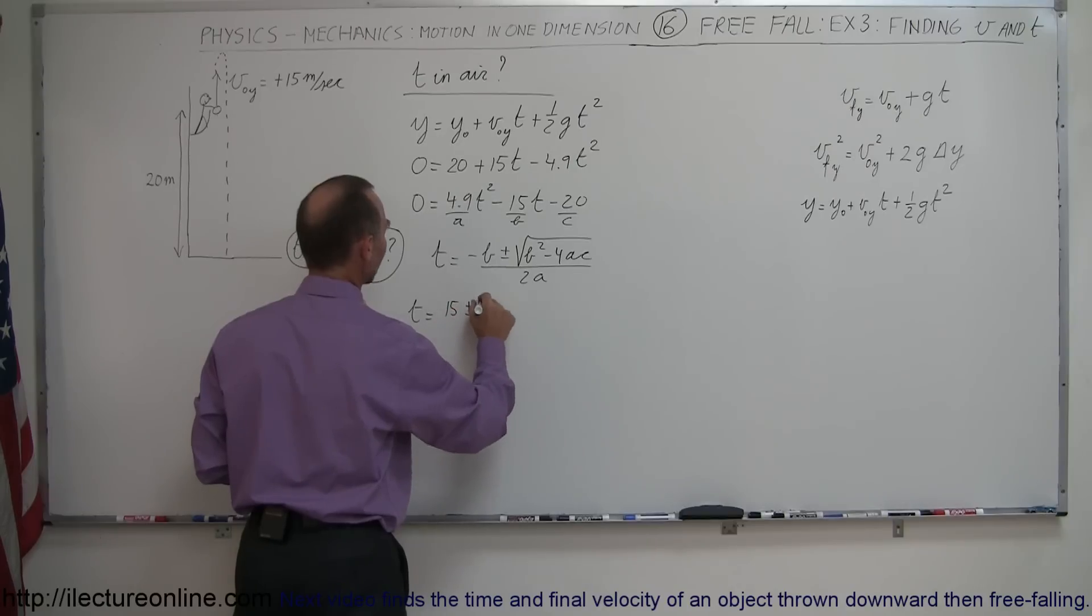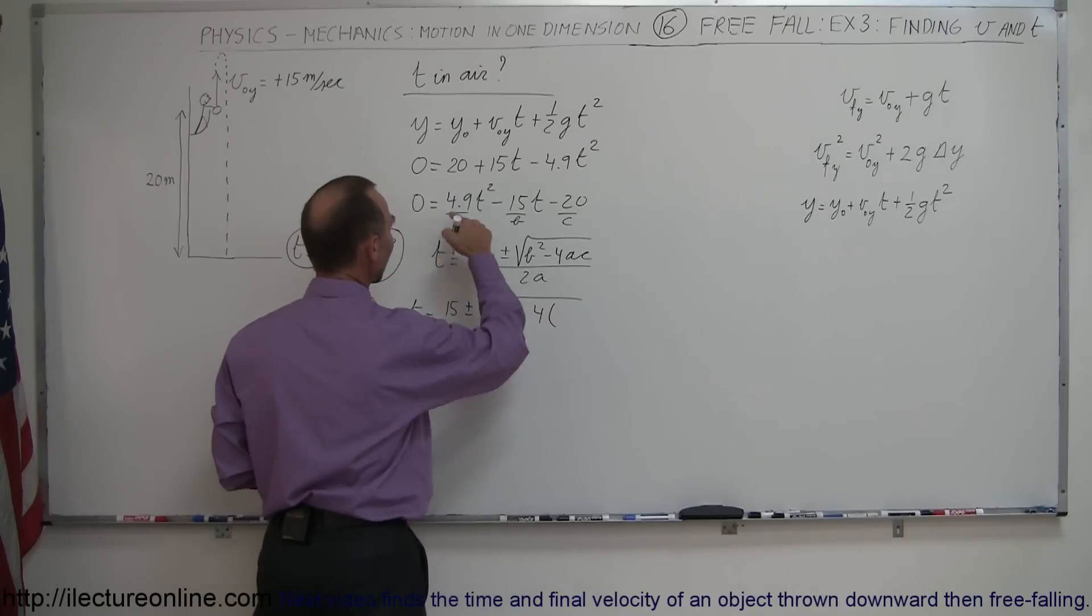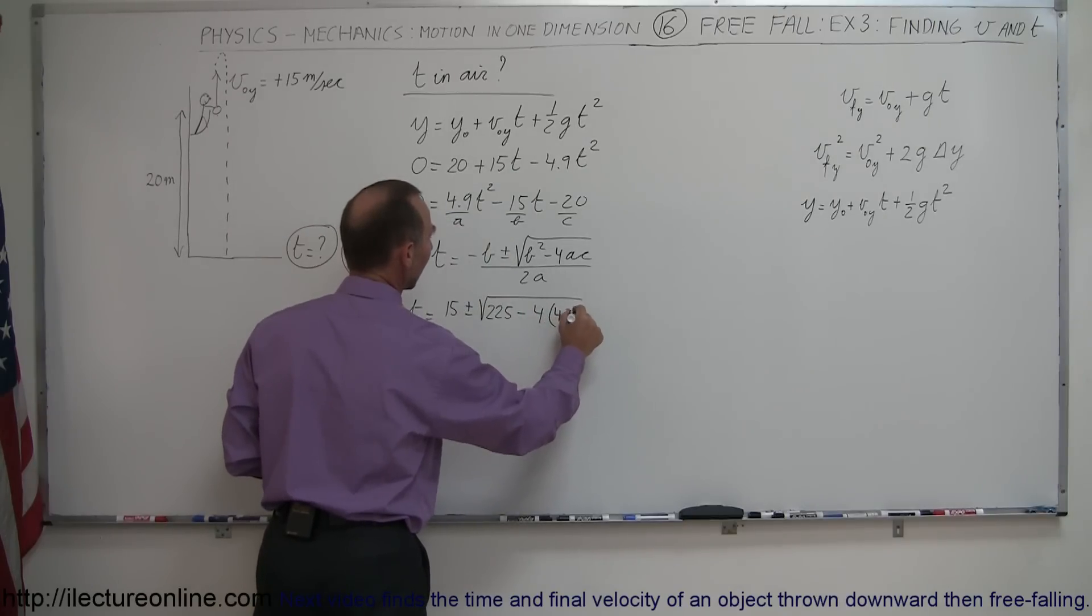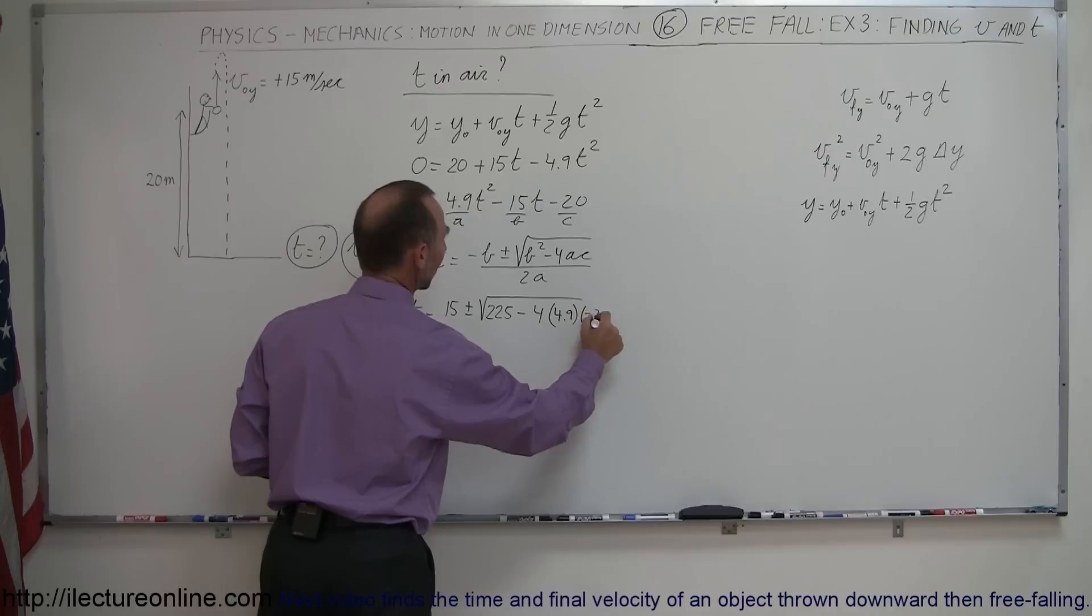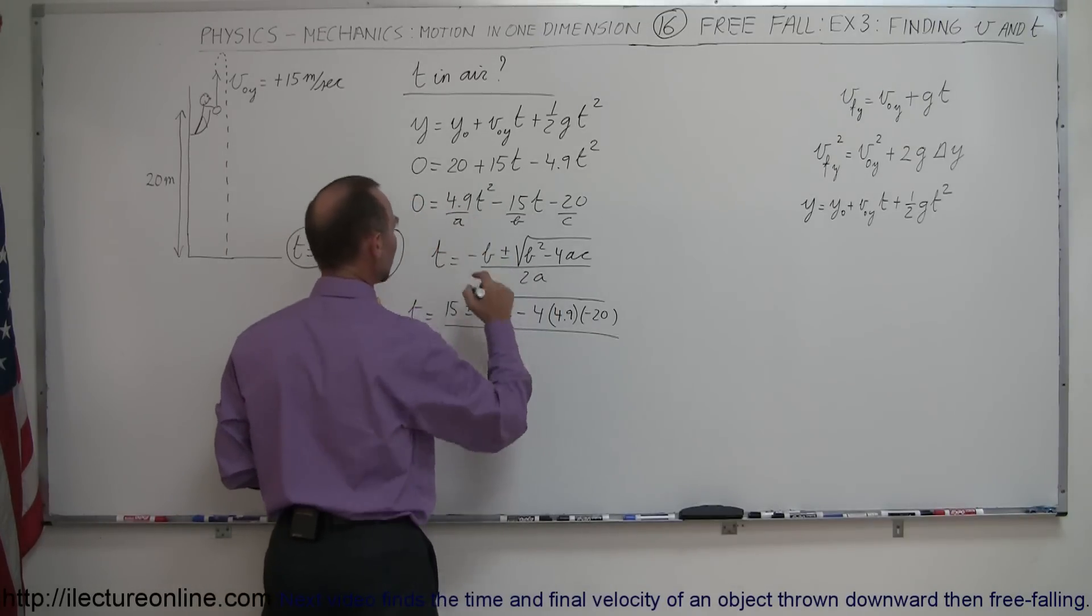That's positive 15 plus or minus the square root of b squared, now 15 squared is 225, minus 4 times a which is 4.9 and times c which is a minus 20. Notice that this minus will cancel out that minus and then we divide the whole thing by 2a, 2a would be 9.8.